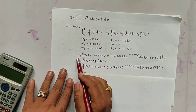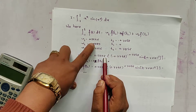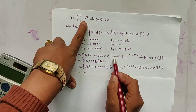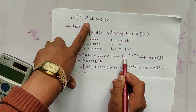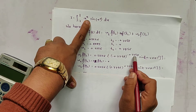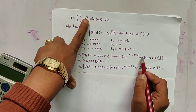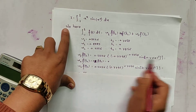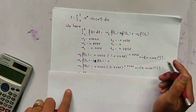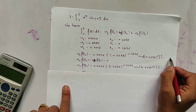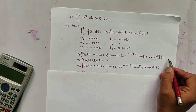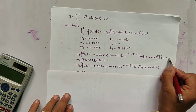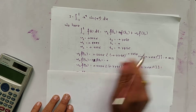First, w1*f(t1): w1 = 0.5556, and f(t1) is evaluated at x = minus 0.7748, giving (minus 0.7748)^(minus 0.7748) * sin((minus 0.7748)^5). Using a calculator, w1*f(t1) = 0.0022.